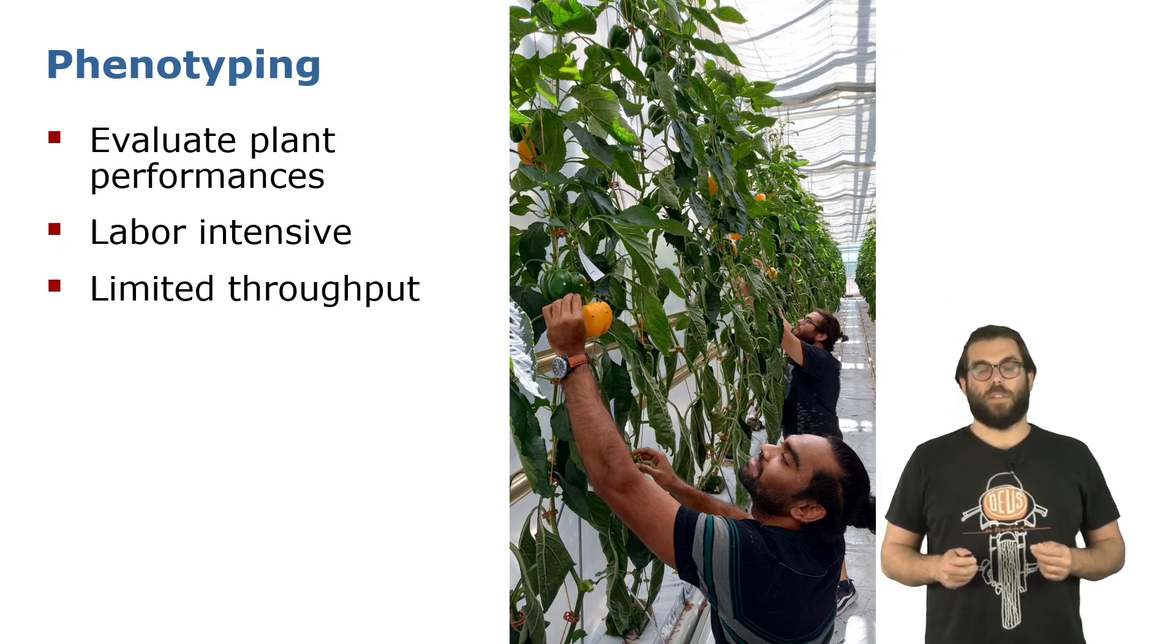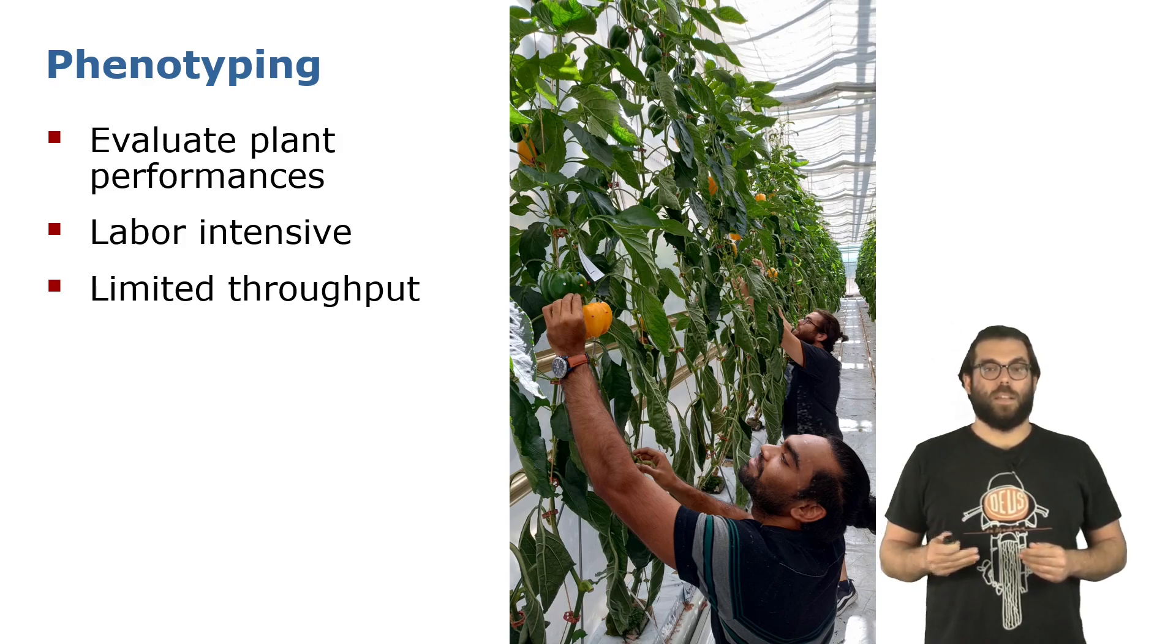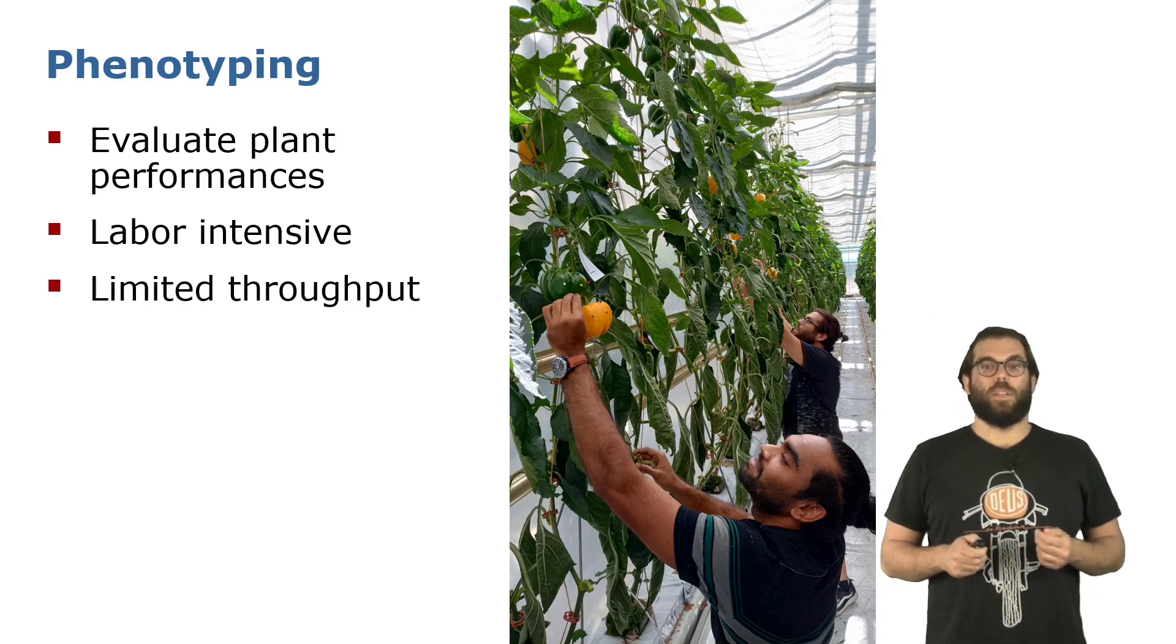Phenotyping is one of the tools that can help us achieve this goal. It is the task of measuring the visual appearance of a plant and therefore understanding and evaluating its performance. Phenotyping is done mainly manually by operators in the field, thus limiting the throughput that we can achieve with this tool.